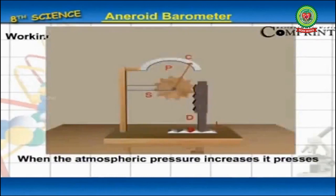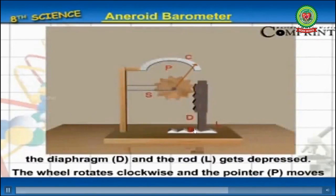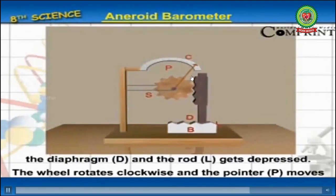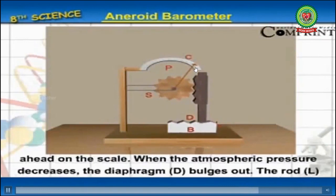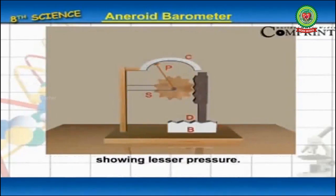Working: When the atmospheric pressure increases, it presses the diaphragm D and the rod L gets depressed. The wheel rotates clockwise and the pointer P moves ahead on the scale. When the atmospheric pressure decreases, the diaphragm D bulges out. The rod L moves up and the wheel rotates anti-clockwise, then the pointer moves in the opposite direction showing lesser pressure.